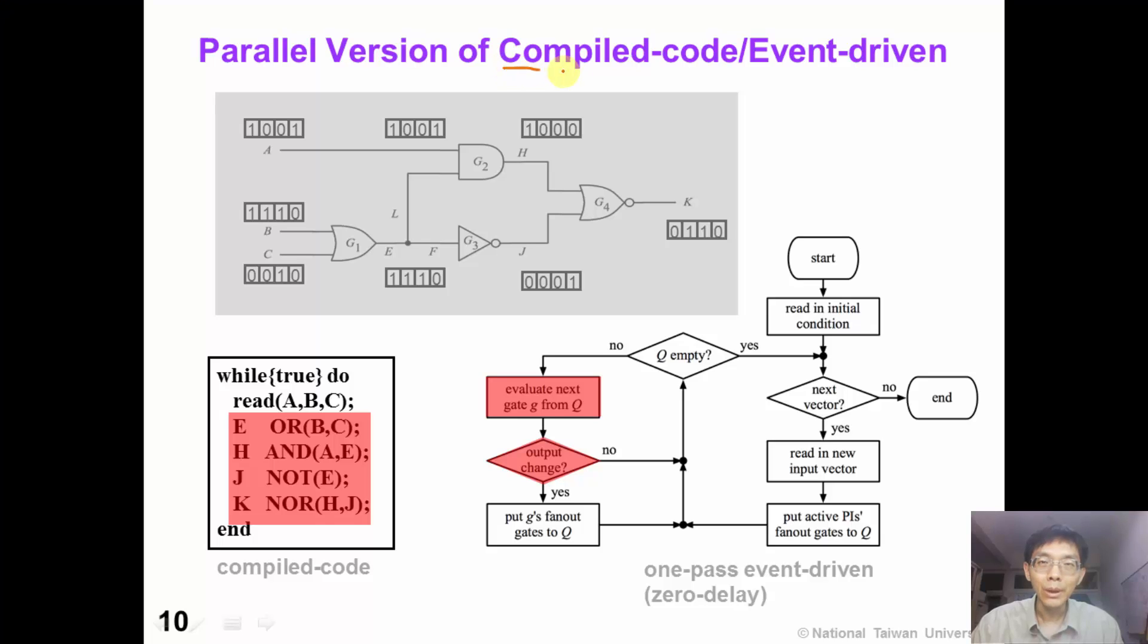Actually, both the compiled code simulator and the event-driven simulator can be implemented in parallel version. For example, for this circuit, if we want to run compiled code simulation, we can simply change these instructions into bitwise logic operation. This can be easily made a parallel version.